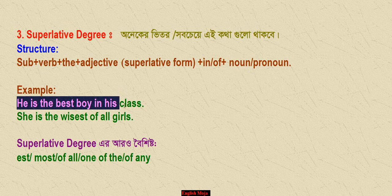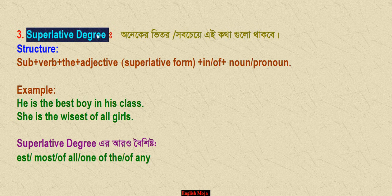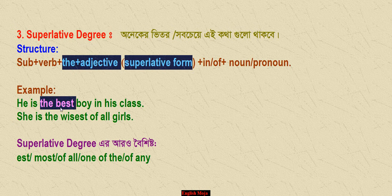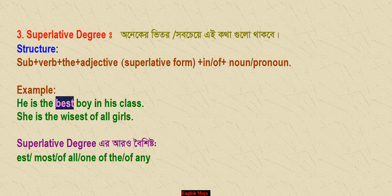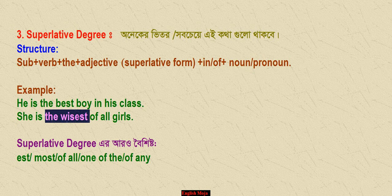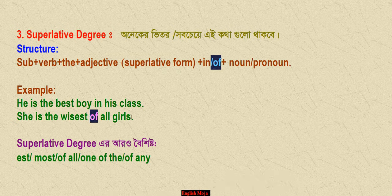For example: 'He is the best boy in his class.' In this sentence, 'best' is the superlative form. Another example: 'She is the wisest of all girls.' This is the superlative form — wise, wiser, wisest — followed by the preposition 'of' and a noun or pronoun.